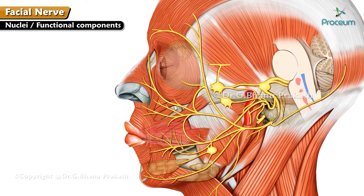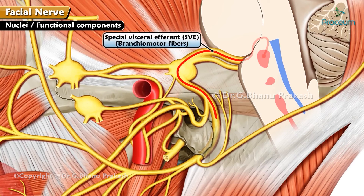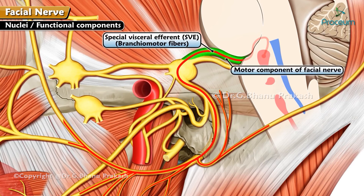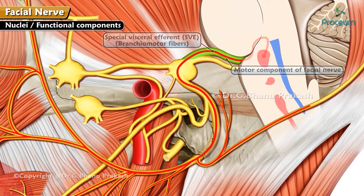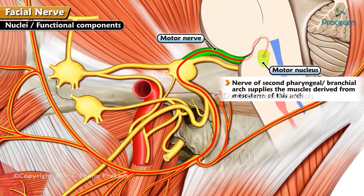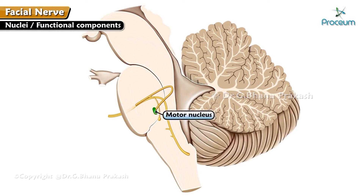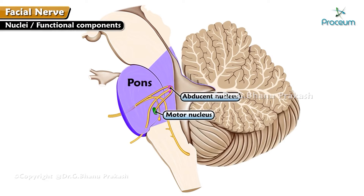Nuclei or functional components. Special visceral efferent, or branchiomotor fibers, form the motor component of the facial nerve. This is a motor nerve arising from the motor nucleus, the nerve of the second pharyngeal or branchial arch, supplying the muscles derived from the mesoderm of this arch. The motor nucleus is located in the lower part of the pons, anterior to the abducens nucleus.